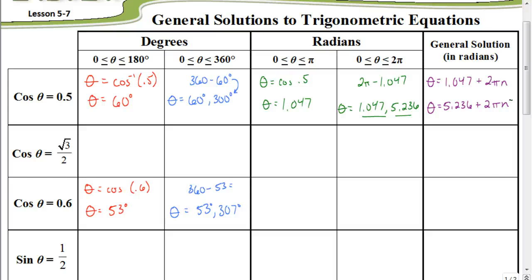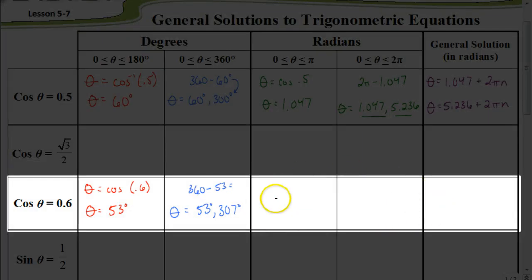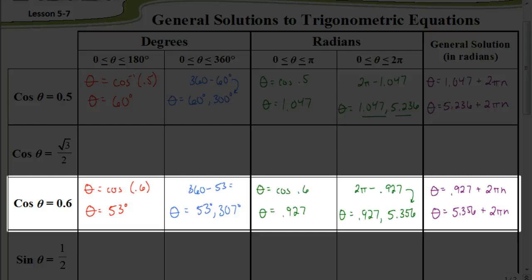Pause the video and find the answers for the last three cells dealing with cosine of 0.6 — finish out that row in radians. You should have gotten 0.927 and 5.356. Take the inverse cosine of 0.6 to get 0.927, then subtract 0.927 from 2π to get 5.356. The two general solutions are 0.927 + 2πn and 5.356 + 2πn, which give you any solution on the cosine function.